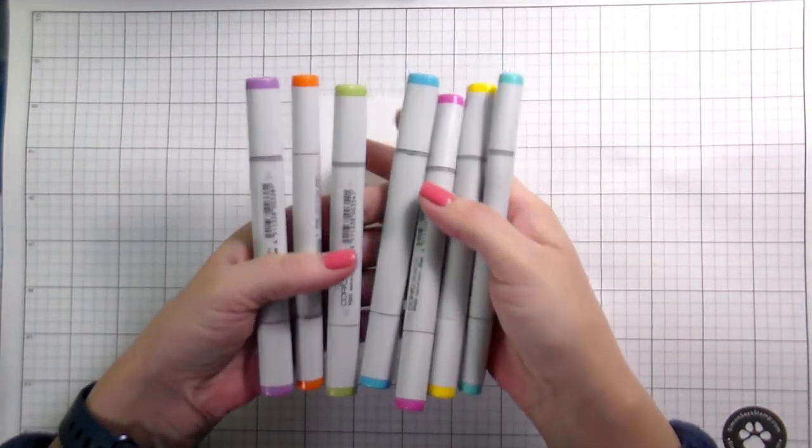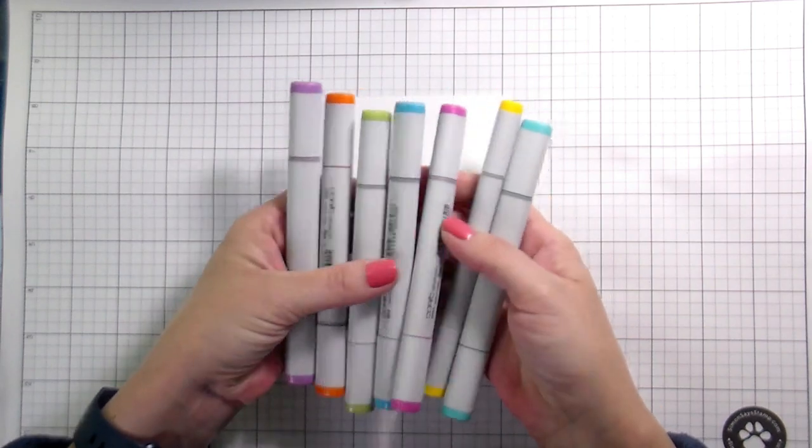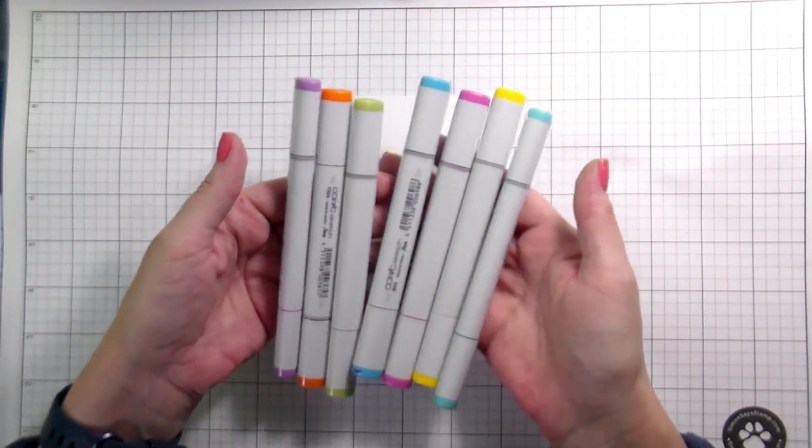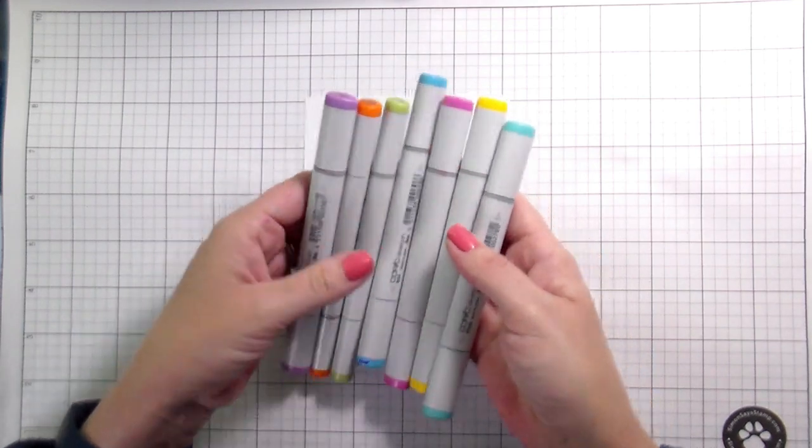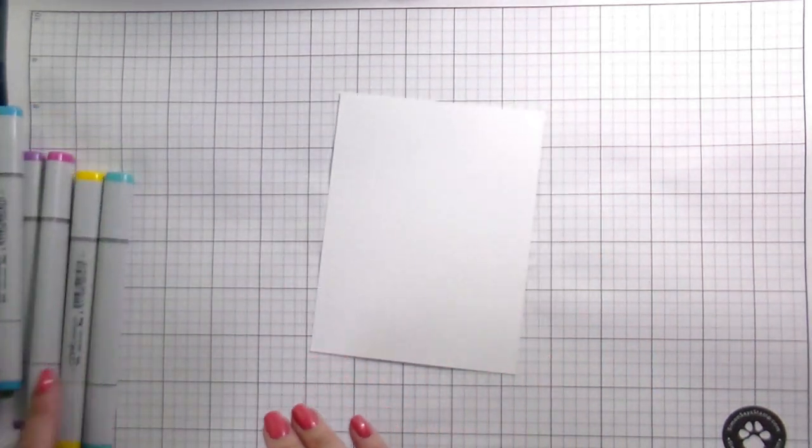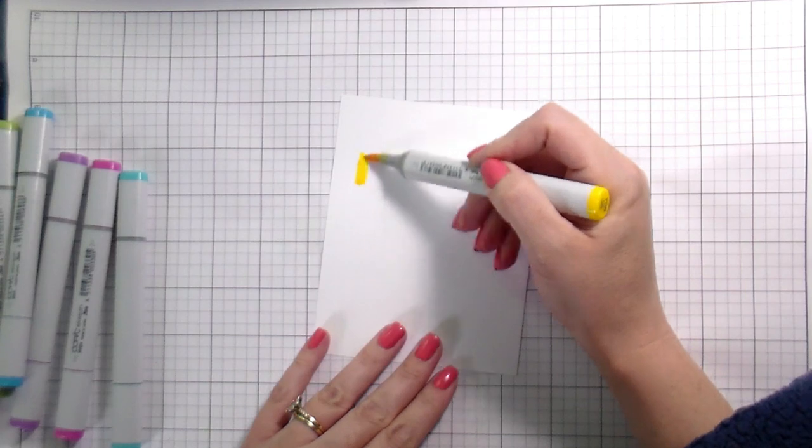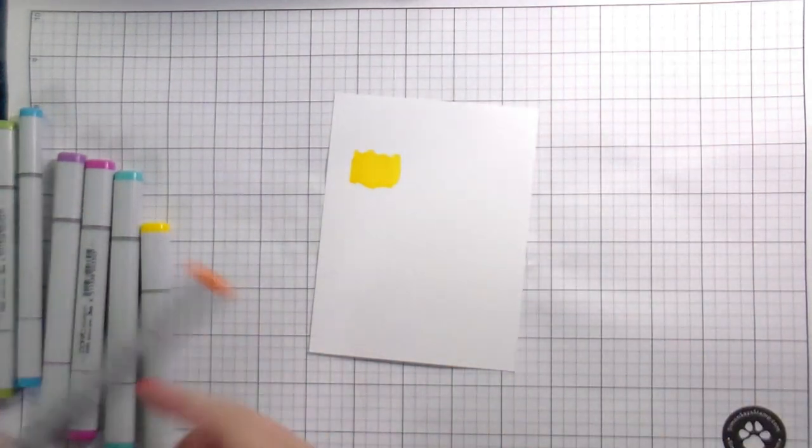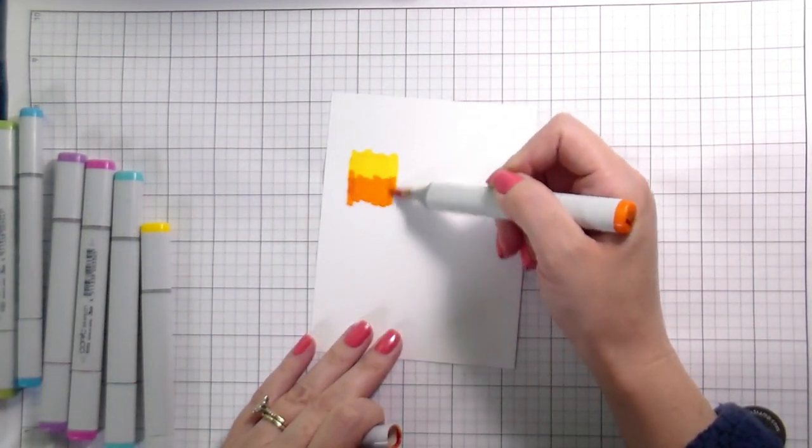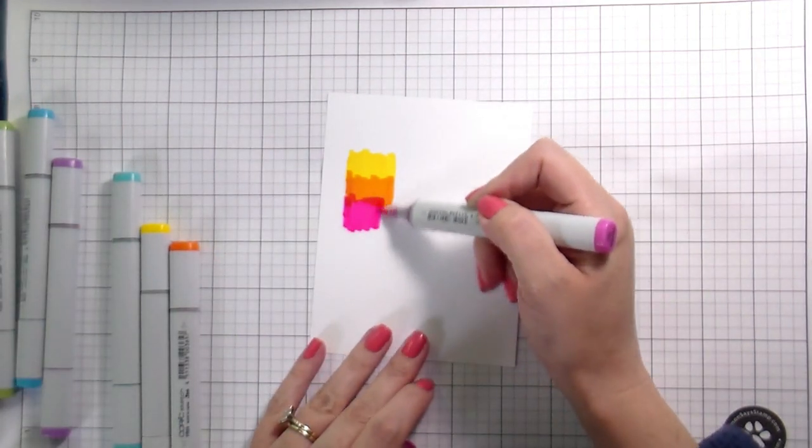So the point of today's video is talking about these specific seven Copic markers. It is going to be a RV04, a YRO4, a Y08, a YG03, a B45, a B04, and a V04.